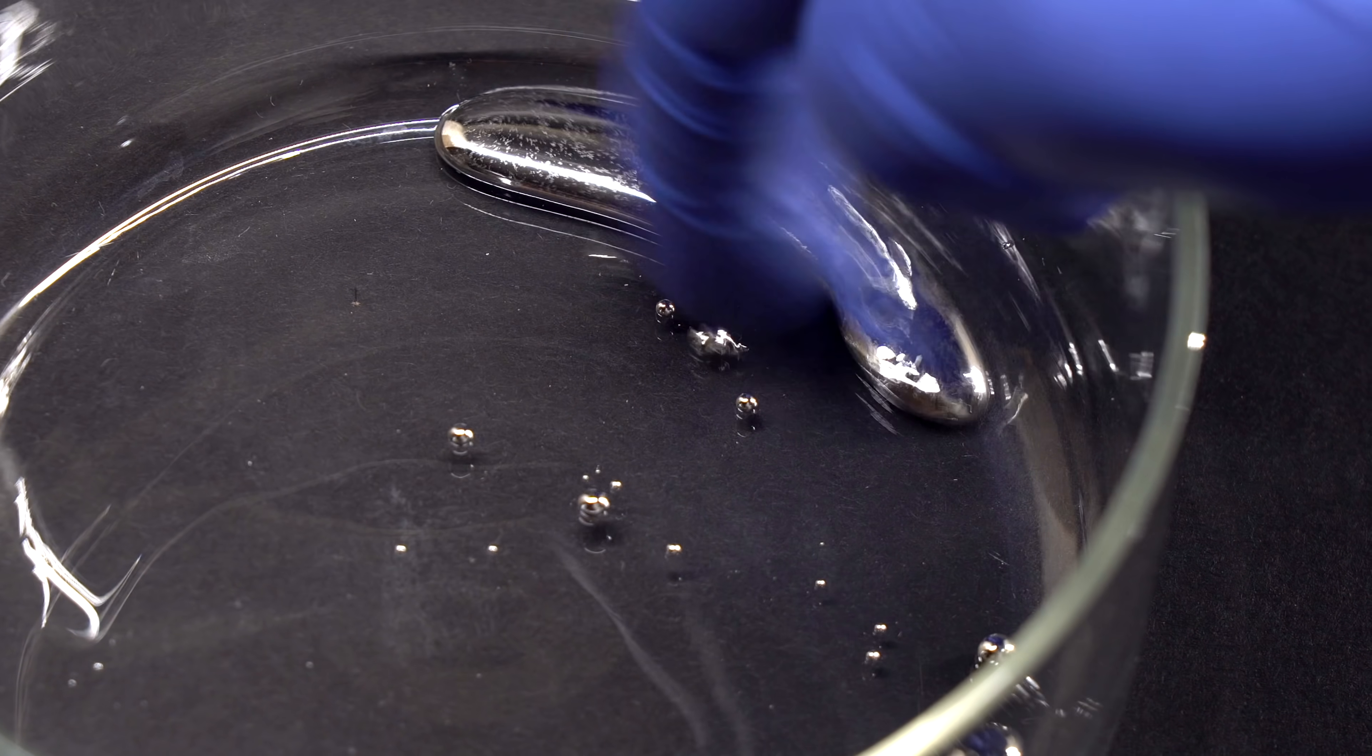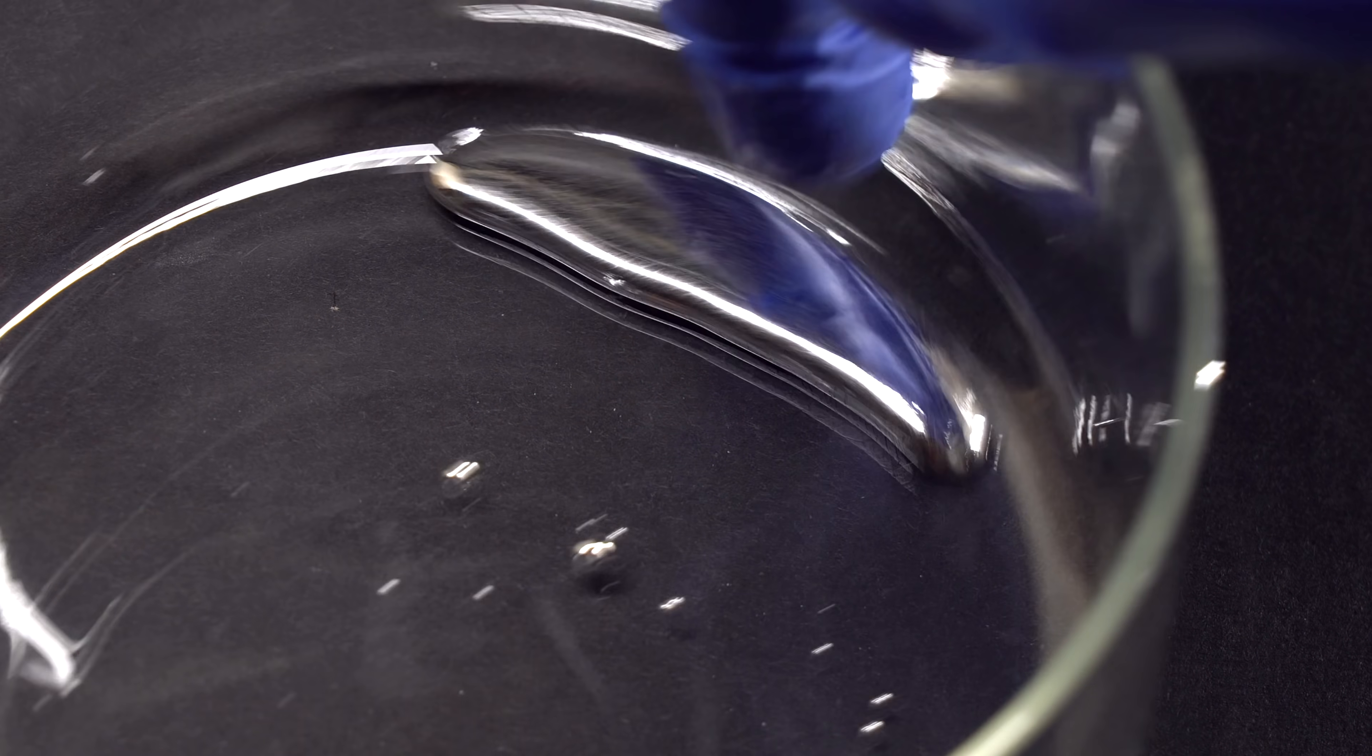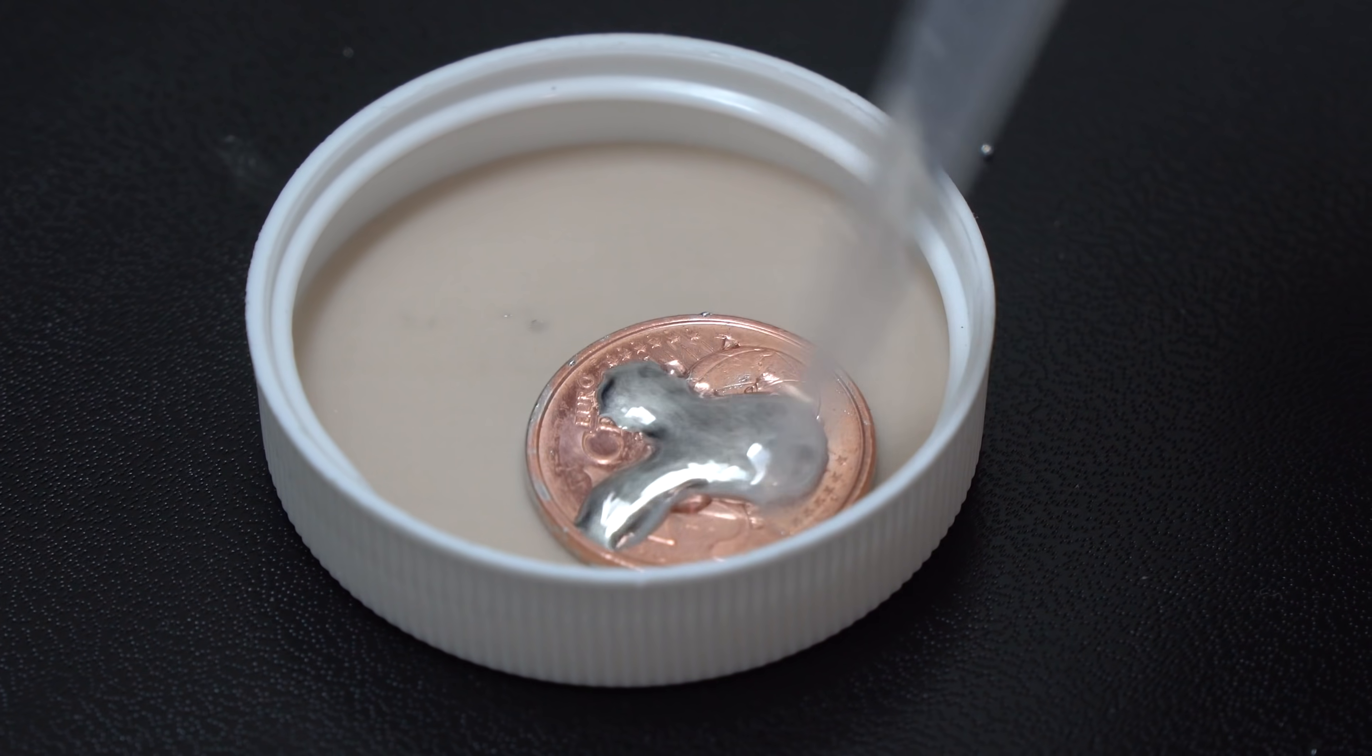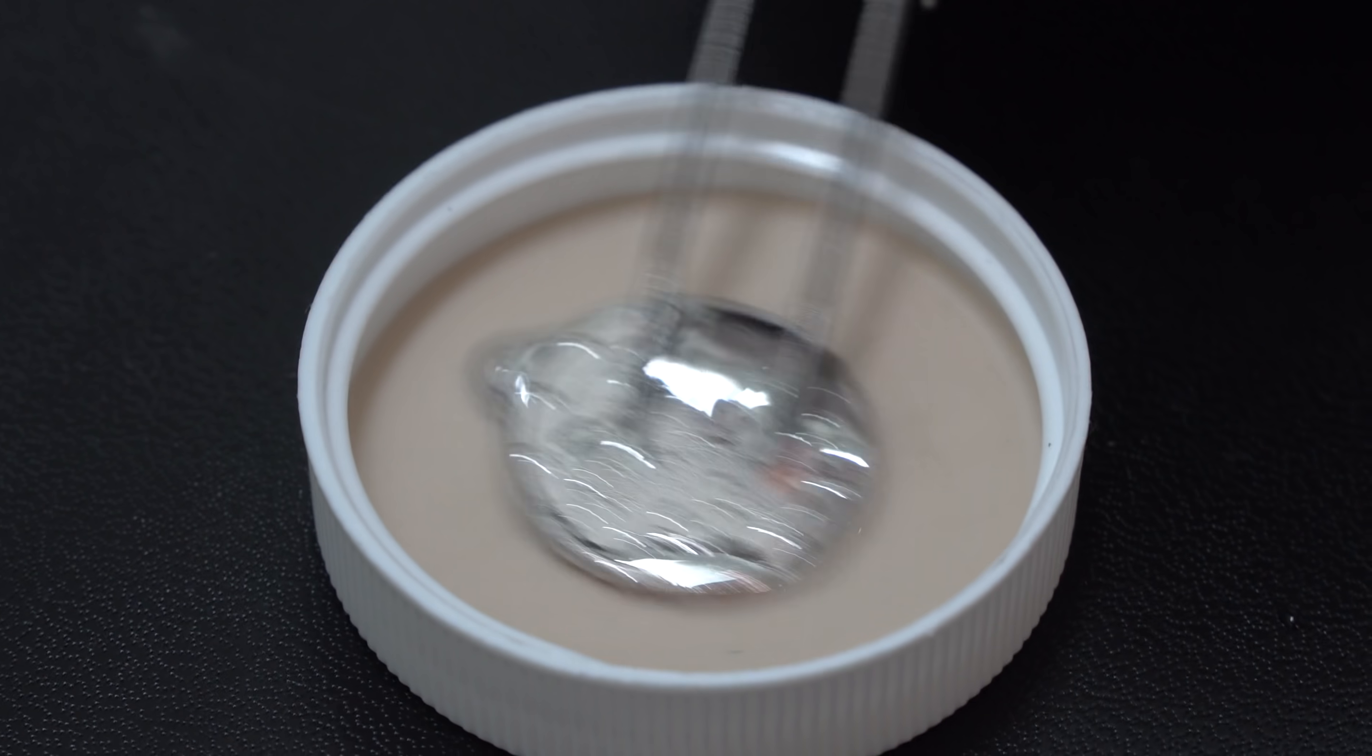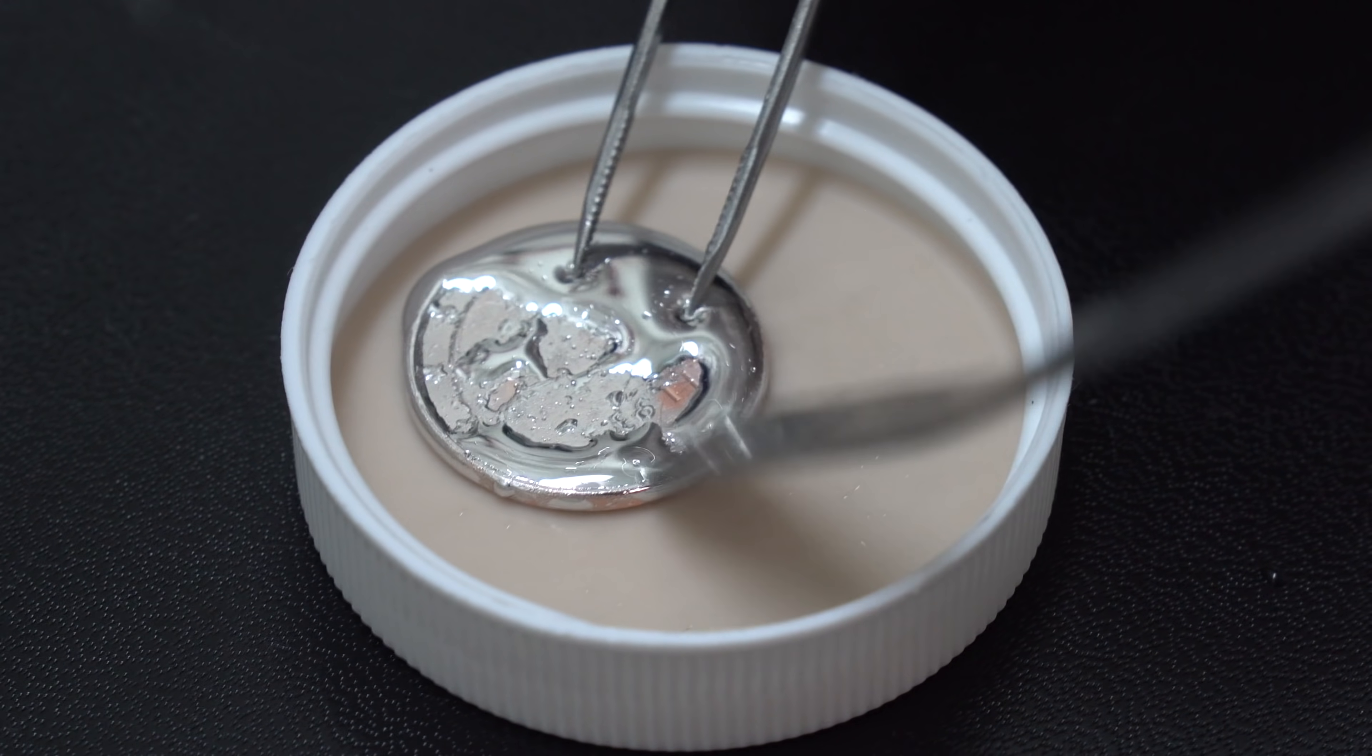However, when reacting with certain other metals, mercury behaves differently to how it behaves on the surface of glass. For instance, mercury soaks the surface of copper-plated yellow coins, creating amalgam, which is an alloy of copper and mercury.